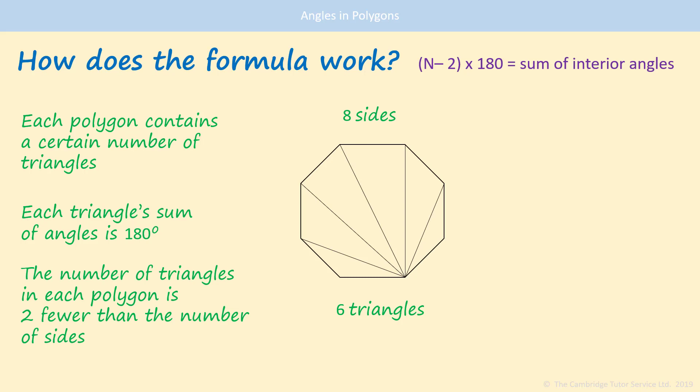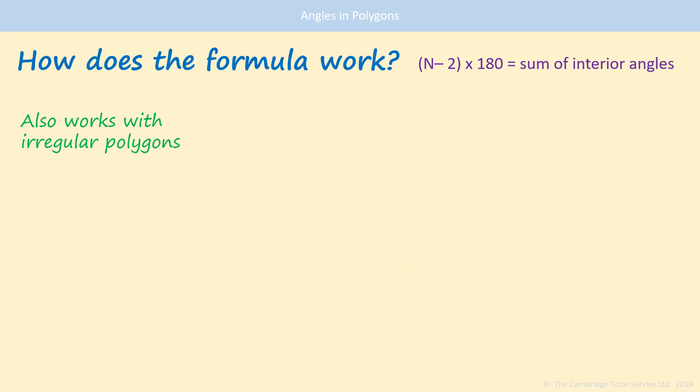Each triangle's sum of angles is 180 degrees. And note that we have 6 triangles in there, which is 2 fewer than the number of sides. And a quick note, you might get irregular polygons. The sum of angles still works out the same.